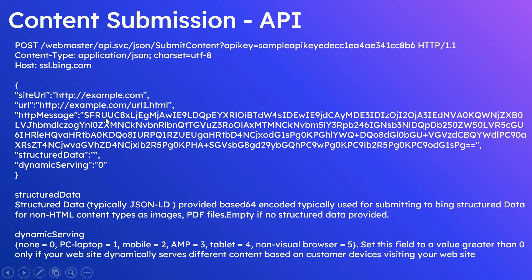Let us now see the details on the API. You POST the request to the webmaster API — specifically, POST to the submit content endpoint. You should specify the API key, the content type as application/json, and the host as ssl.bing.com. The JSON input includes your site URL, the URL you are submitting for indexing, and the HTTP message as base64-encoded data containing the HTML content and headers.